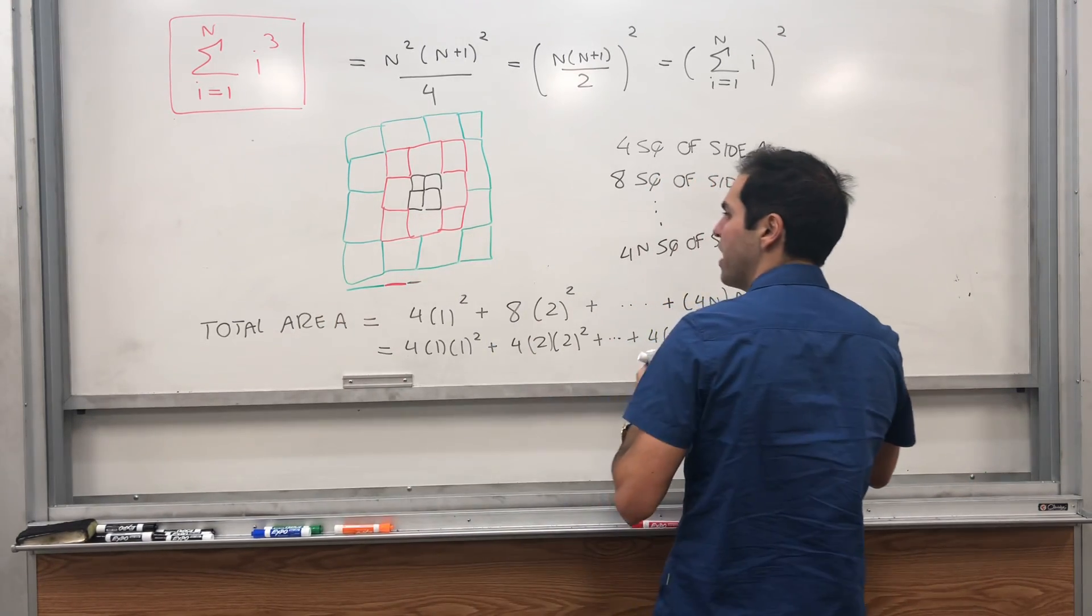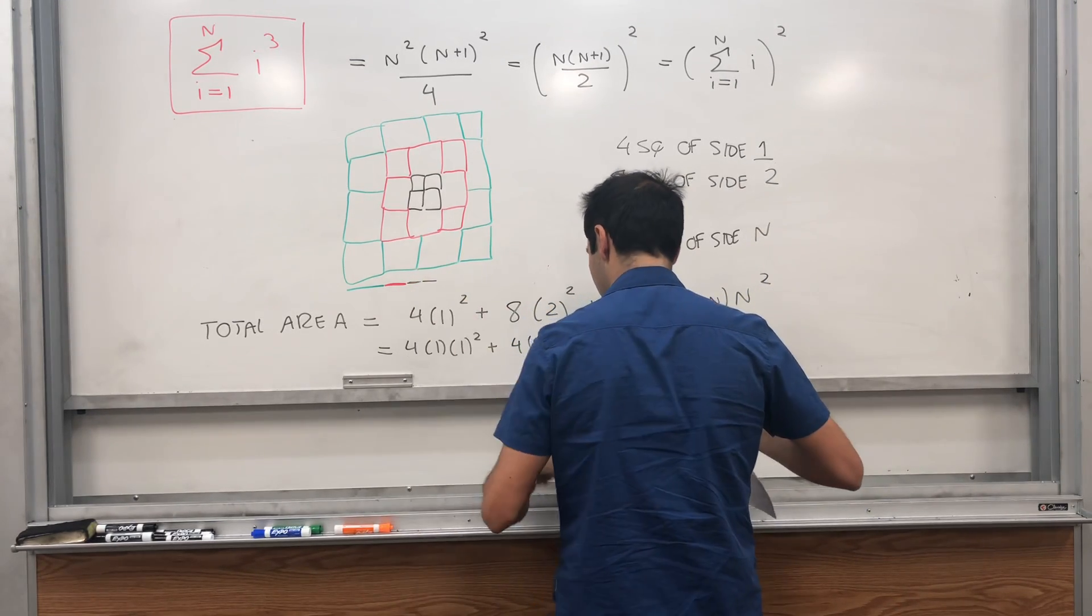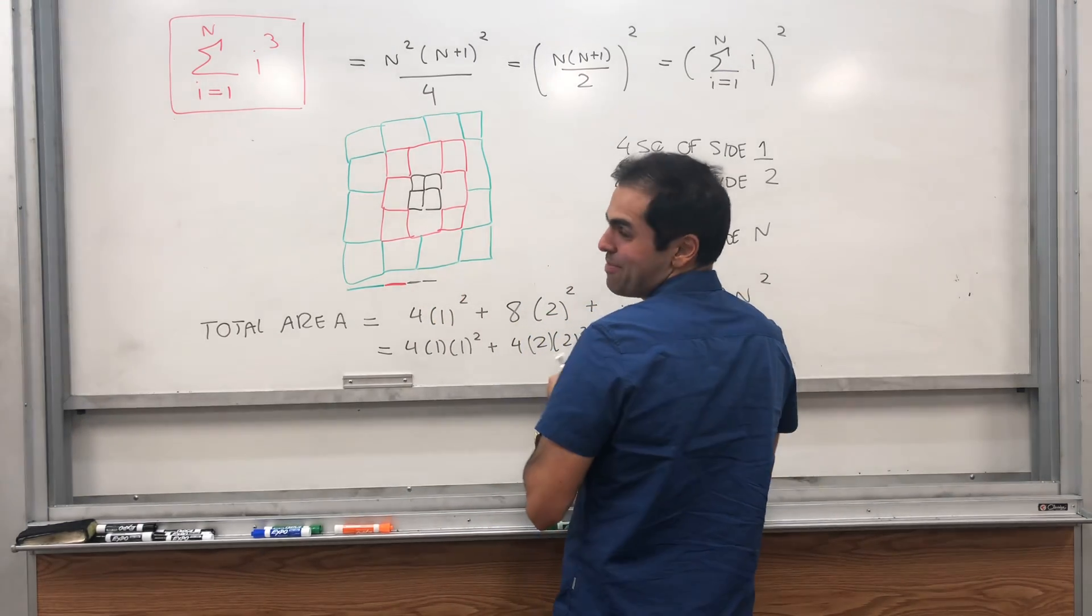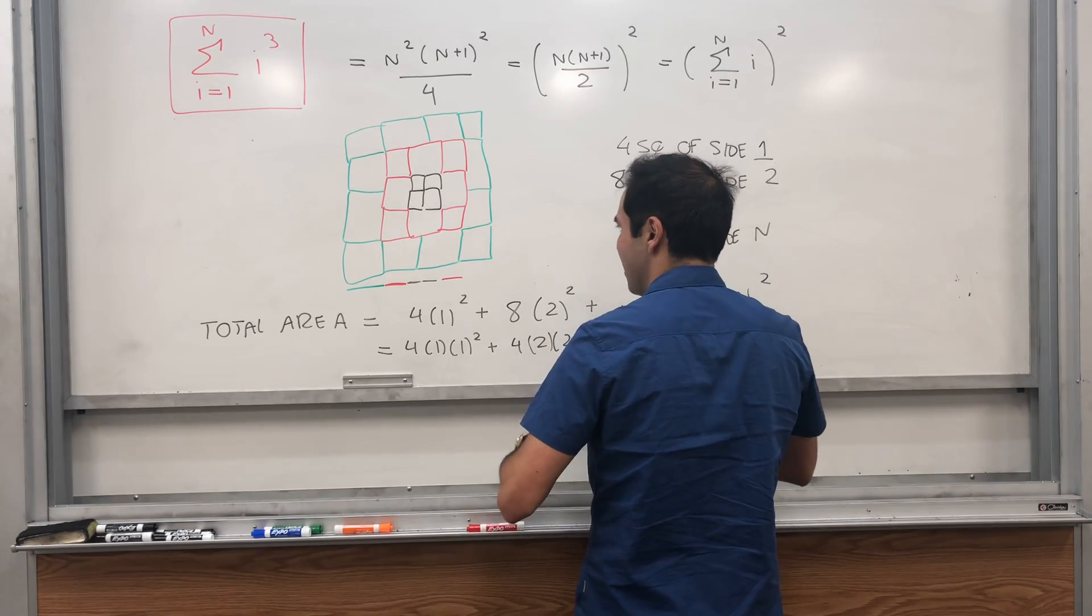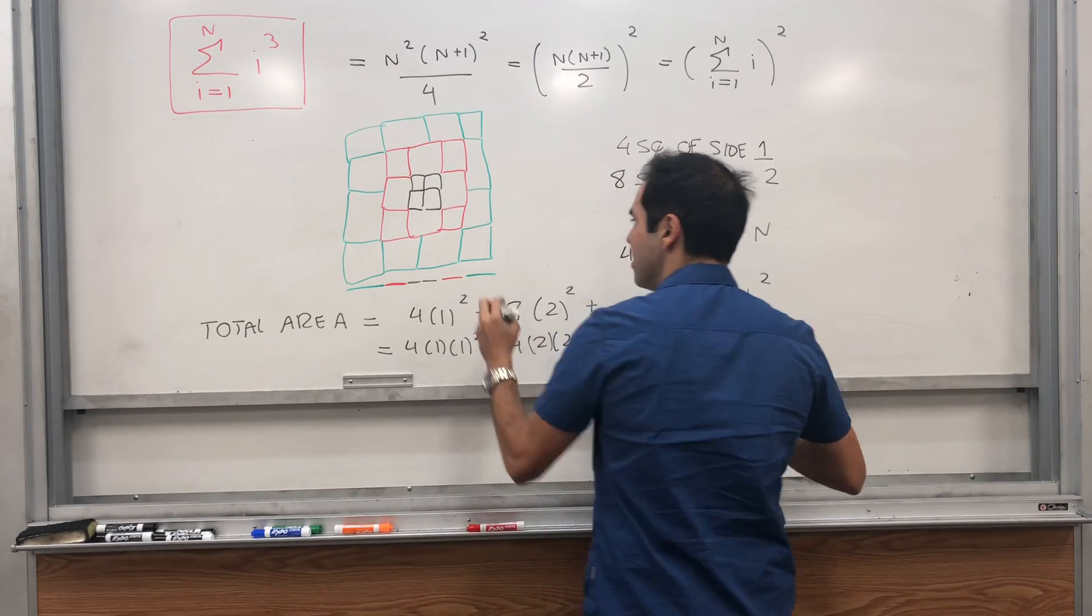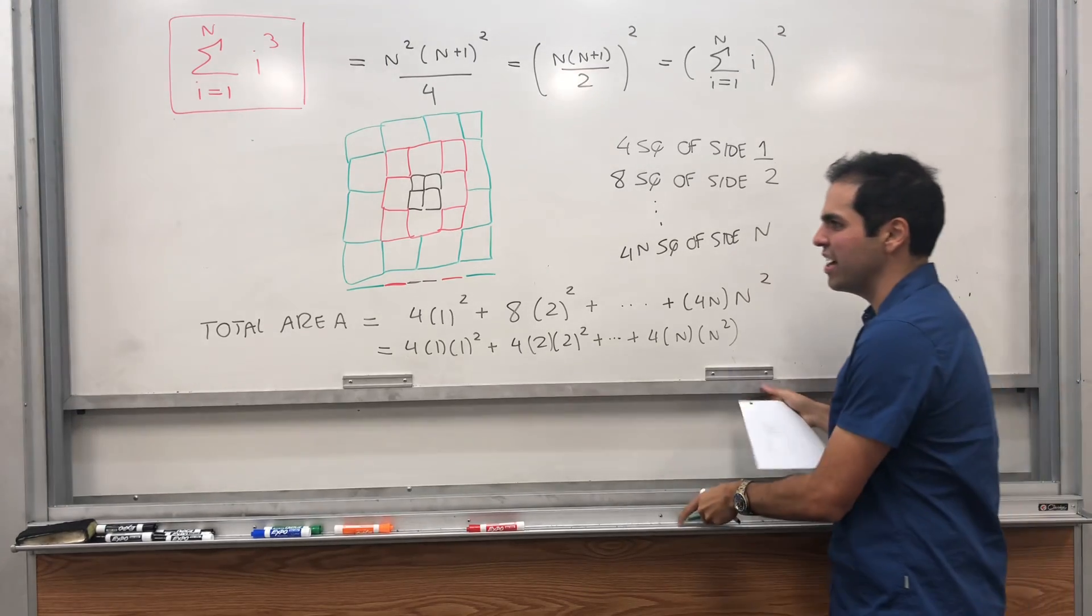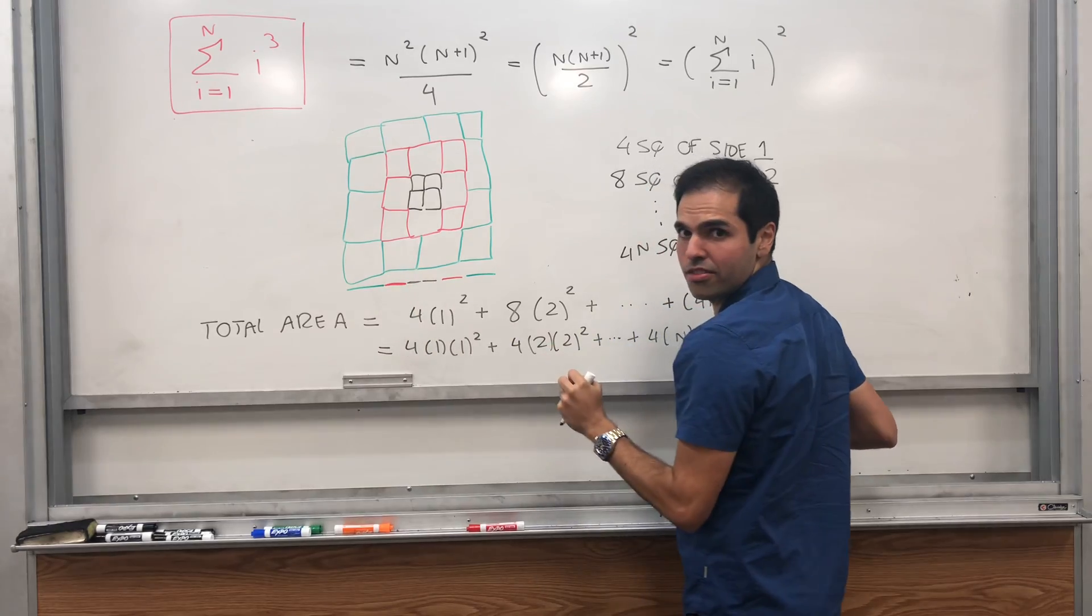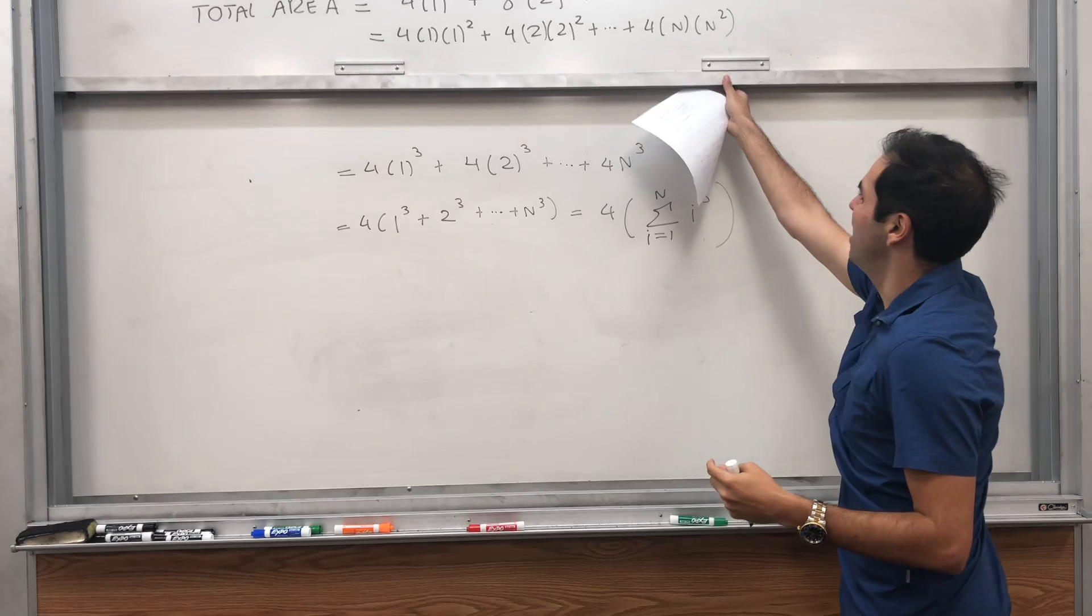And you double count it. So we have this, then, and then this. So you see, what is the side of the big square? Here, it's precisely 1 plus 2 plus 3, and plus 1 plus 2 plus 3. So it's really double that.